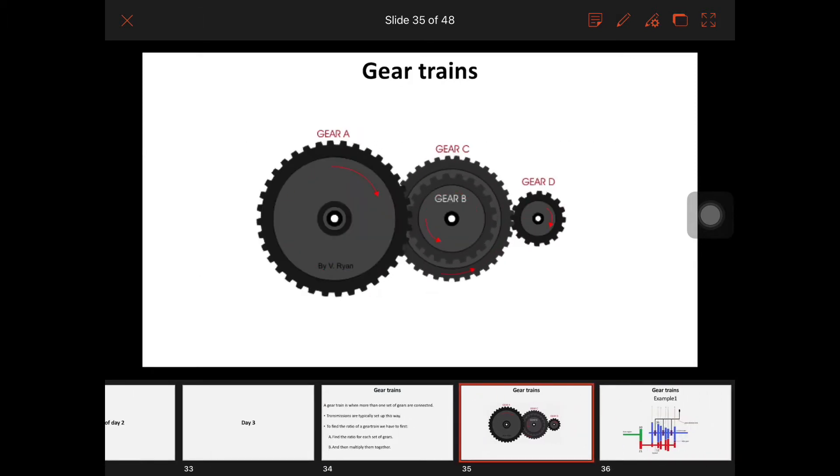Here's an example of a gear train or complex gear setup. We have gear A, which is this big gear, connected to the small gear, which is gear B. That gear is physically connected to gear C, which is this larger gear on the outside, and that is the drive gear for gear D. We can tell that gear A is spinning somewhat fast, and gear B is spinning faster than gear A.